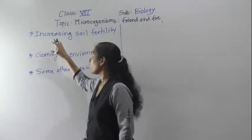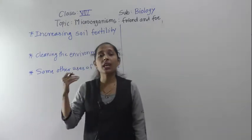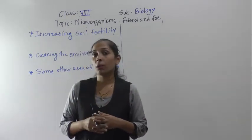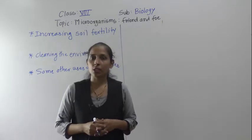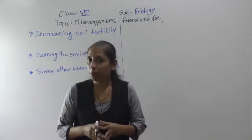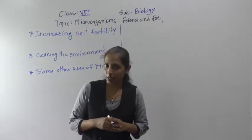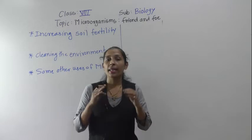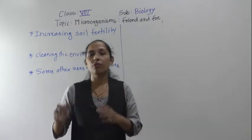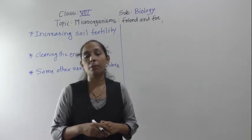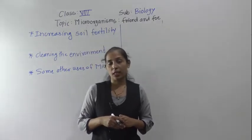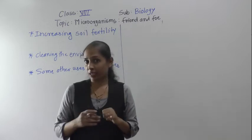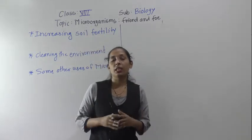Microorganisms are also used to increase soil fertility. In our previous chapter, we discussed the Rhizobium bacteria, which lives in the root nodules of leguminous plants. This Rhizobium bacteria helps to absorb atmospheric nitrogen and convert it into a simple soluble form — nitrates — which increases the fertility of the soil.